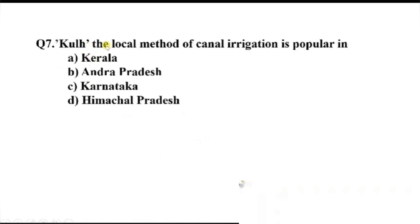Question number 7. Could the local method of canal irrigation is popular in dash? Option A, Kerala. B, Andhra Pradesh. C, Karnataka. D, Himachal Pradesh. The right answer, Option D, Himachal Pradesh.